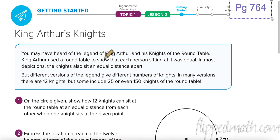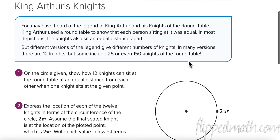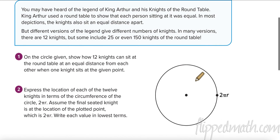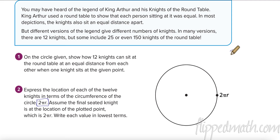King Arthur's Knights. We have a story about King Arthur and his round table. His knights would sit at the round table and King Arthur wanted everyone spaced evenly. In this version, there are 12 knights sitting at the round table and he wants equal distance. We know that the circumference of a circle is 2πr. We want to seat 12 people evenly, so I divide that by 12. Reducing, that's really πr over 6 — so every sixth of the way I'm going to have a new seat.